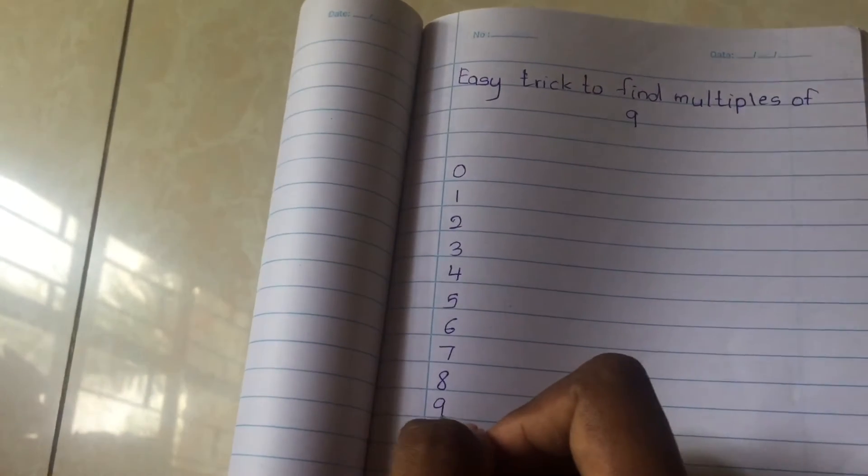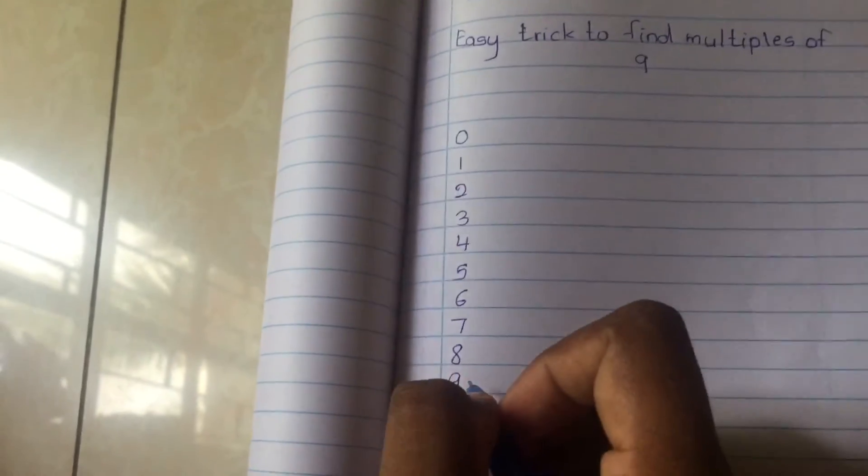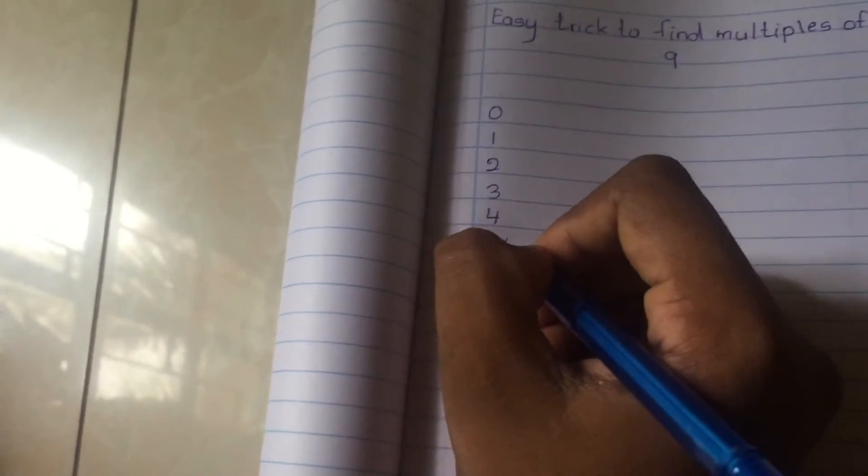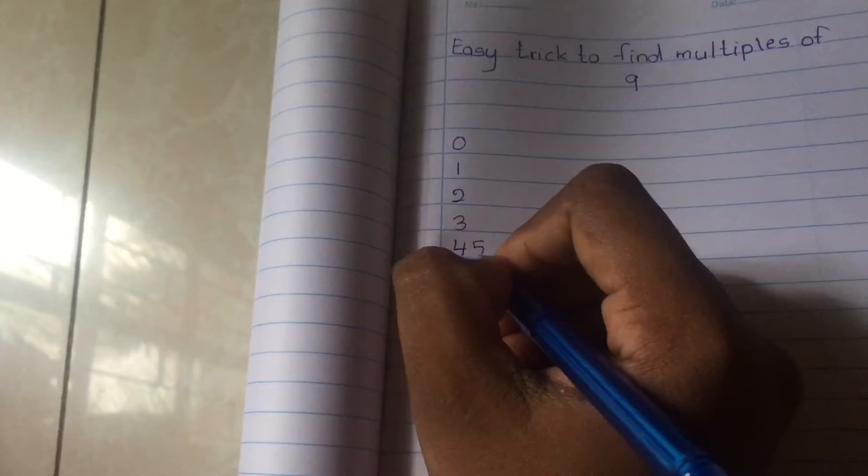Now we must write 0 to 9 from downwards to upwards. That's right: 0, 1, 2, 3, 4, 5, 6, 7, 8, 9.